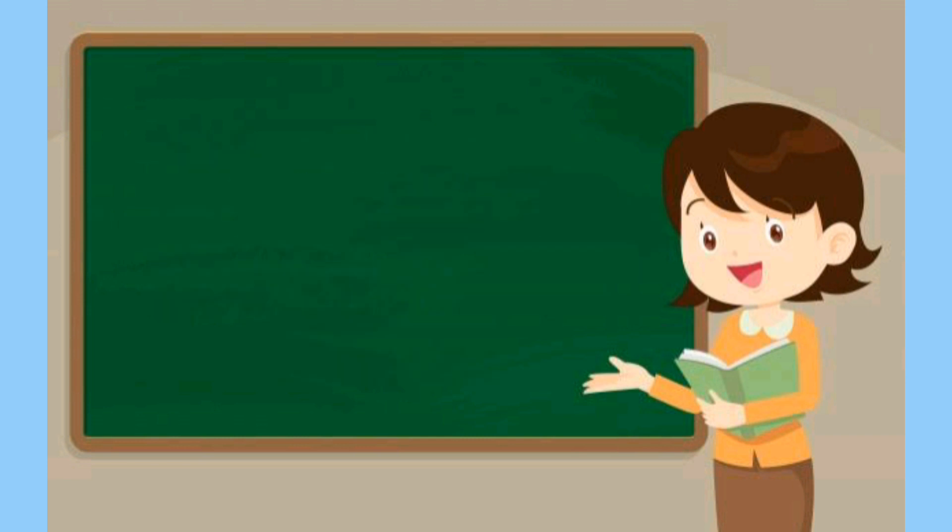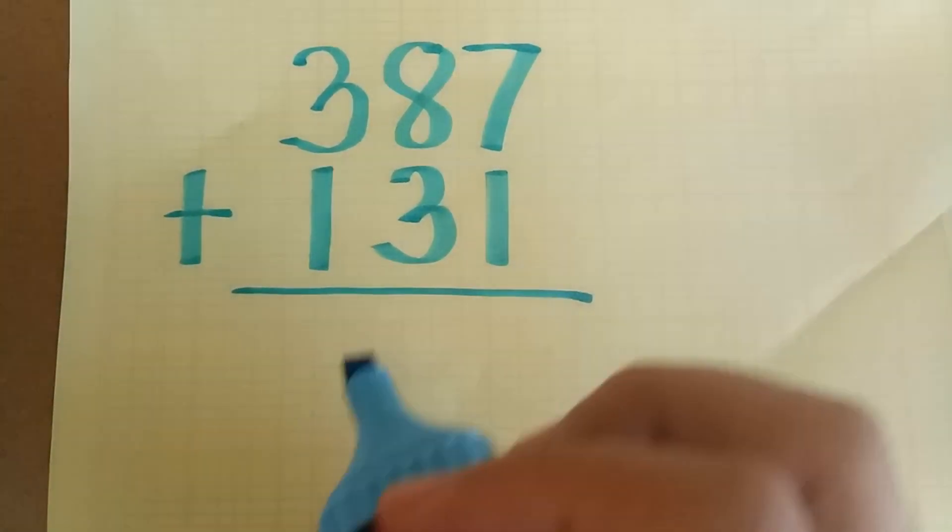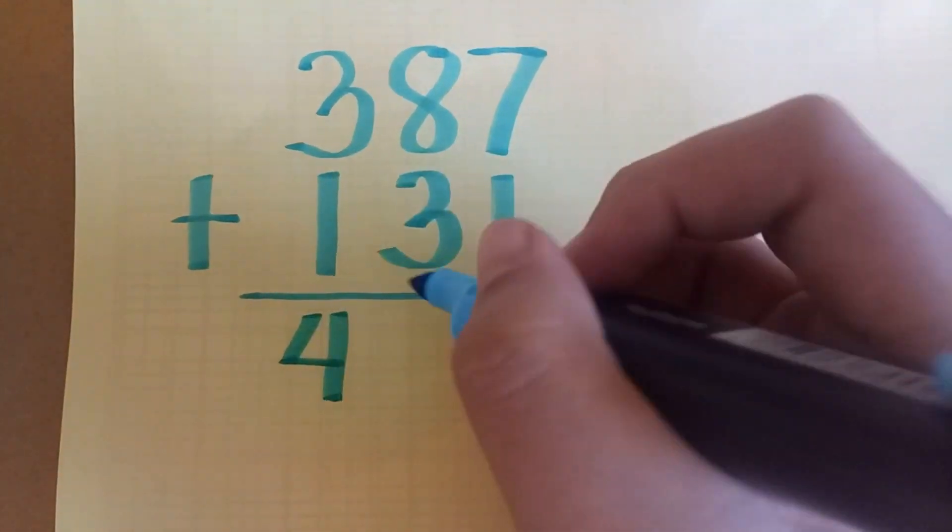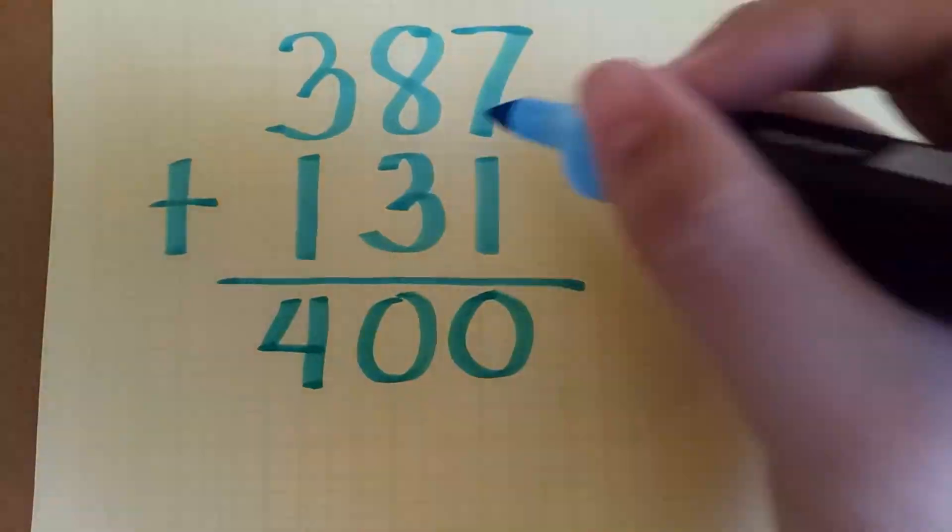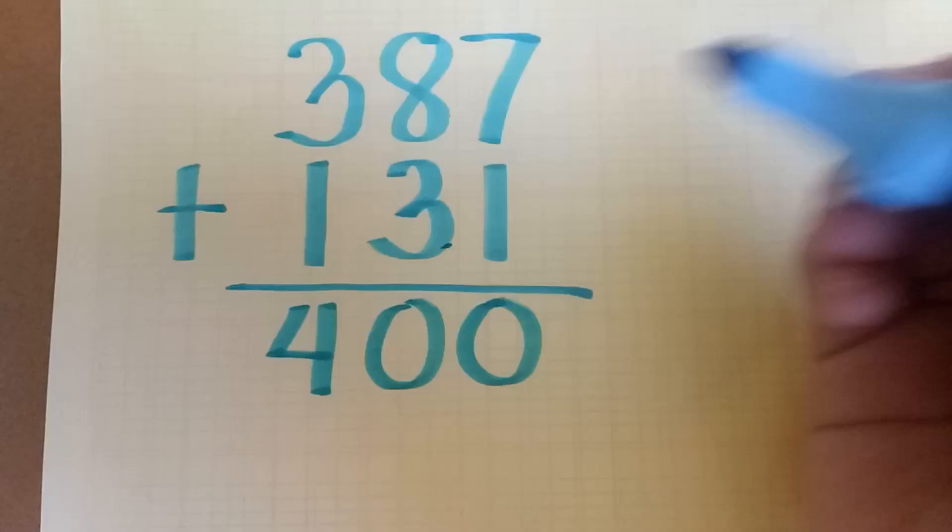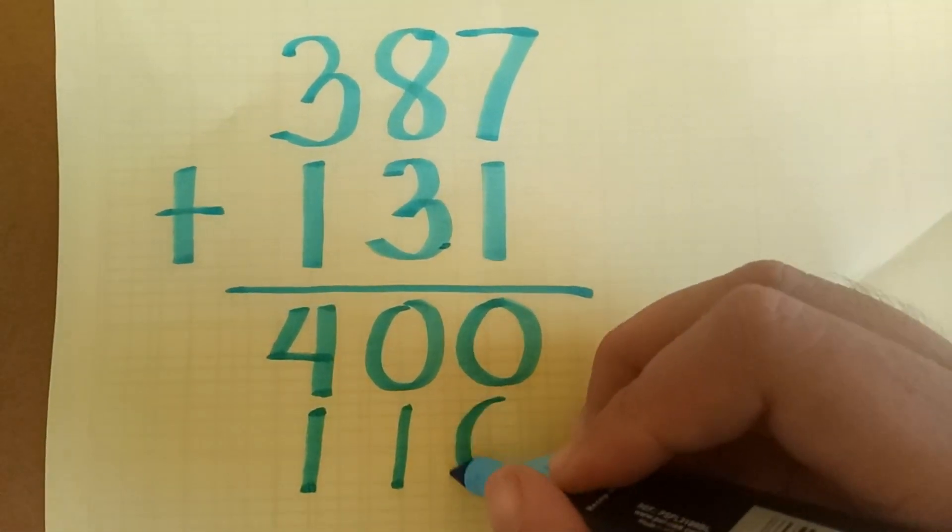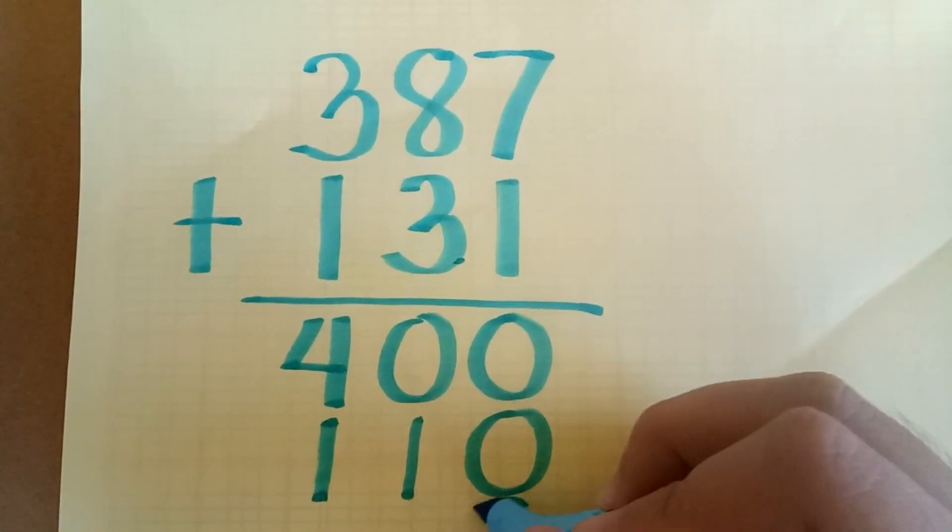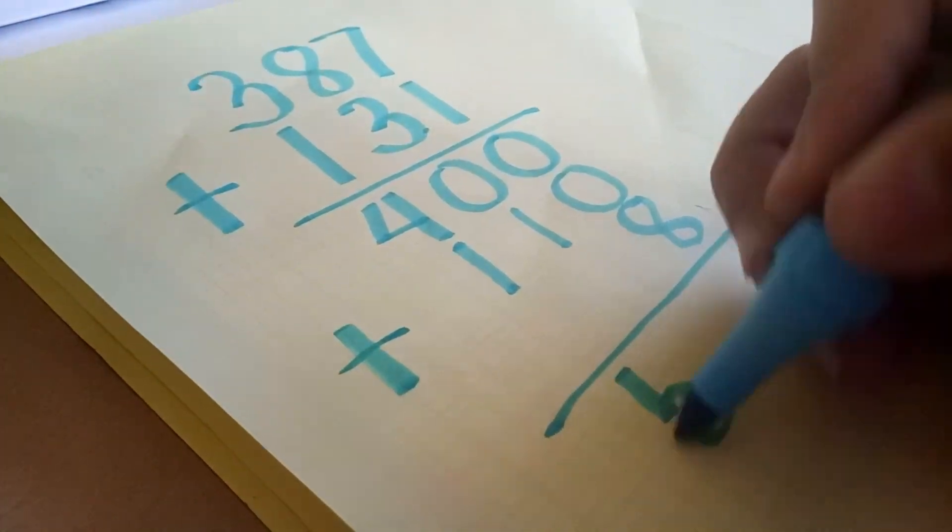For example, in addition, 387 plus 131. Three hundreds plus one hundred equals four hundred. Next, eight tens plus three tens equals eleven tens, or one hundred ten. Seven ones plus one one equals eight. Mental math: five hundred eighteen.